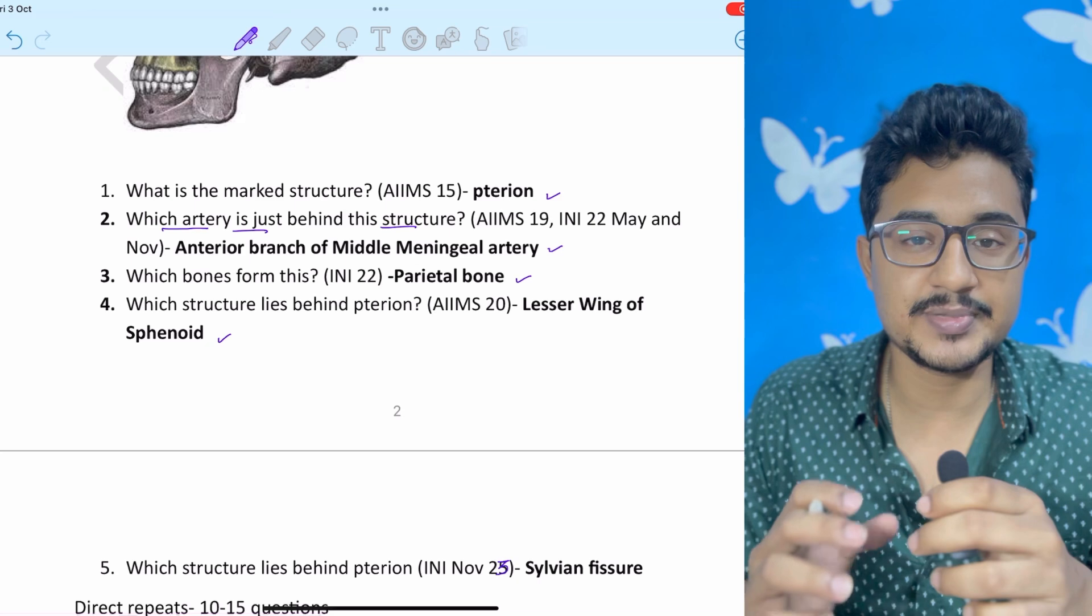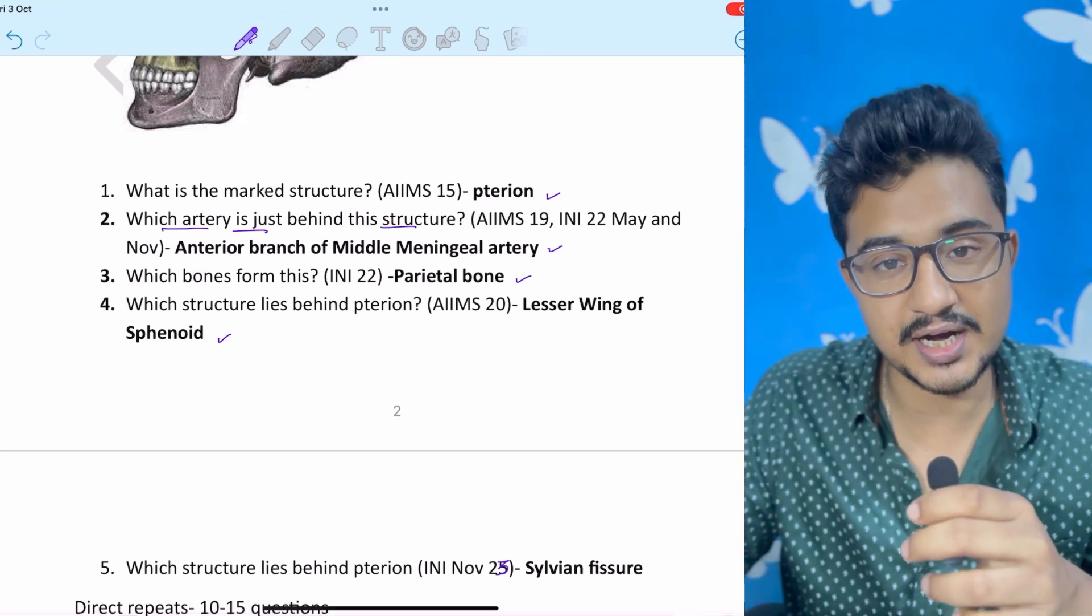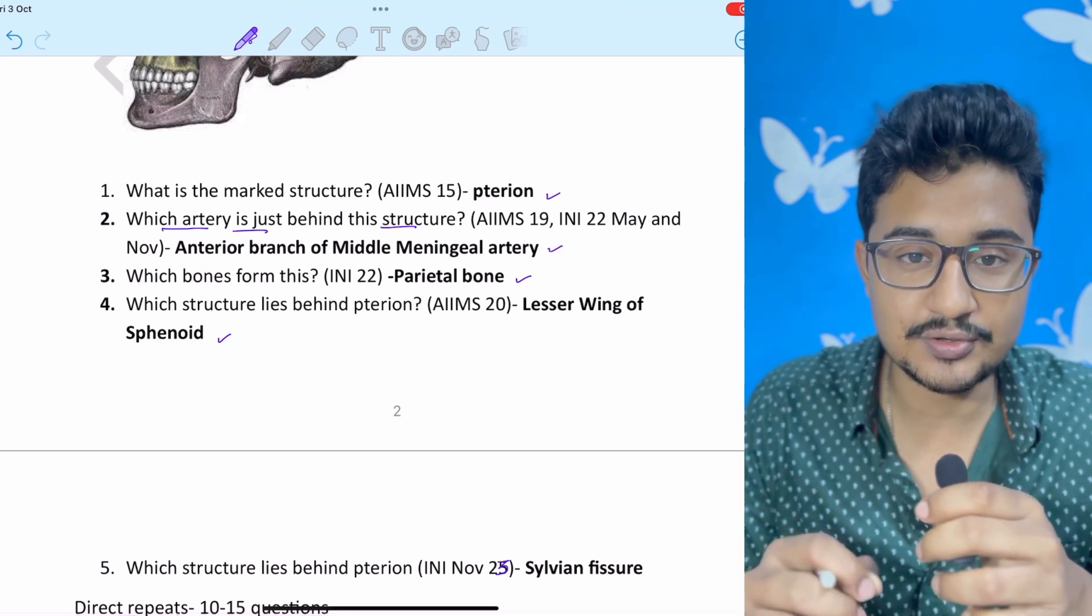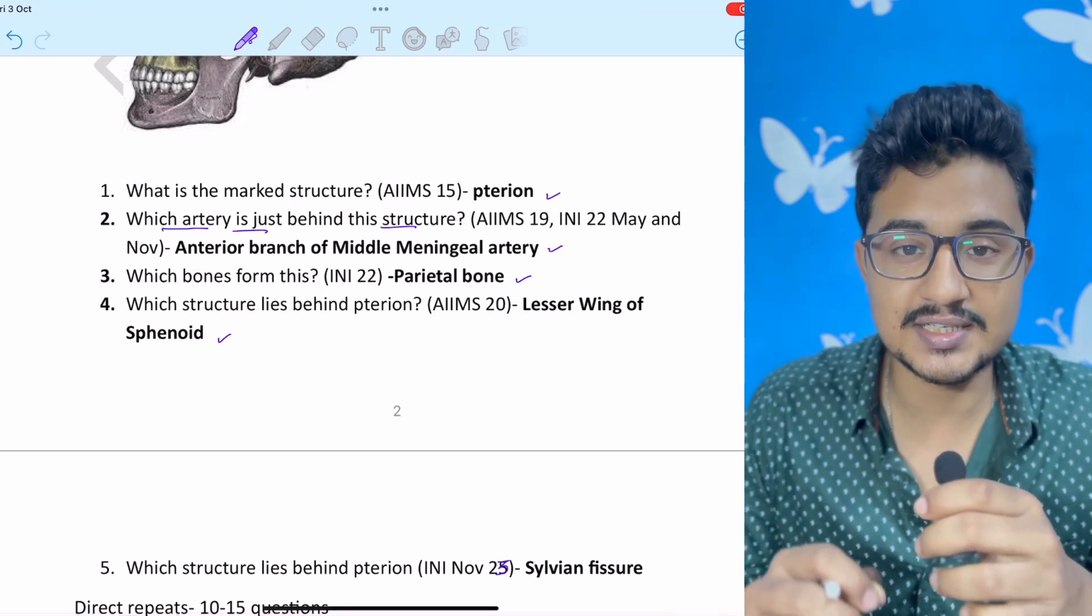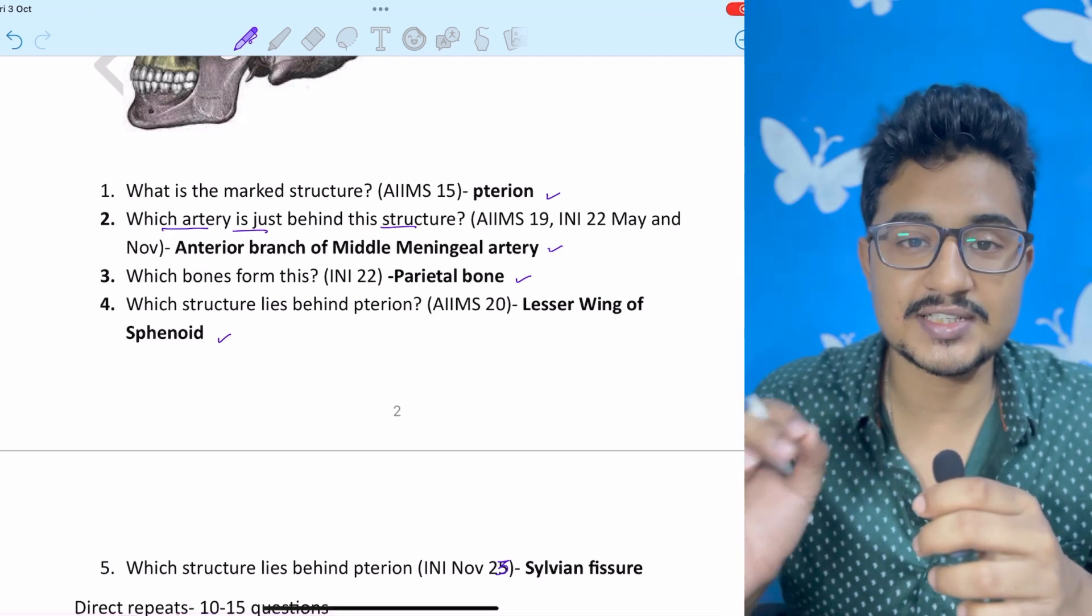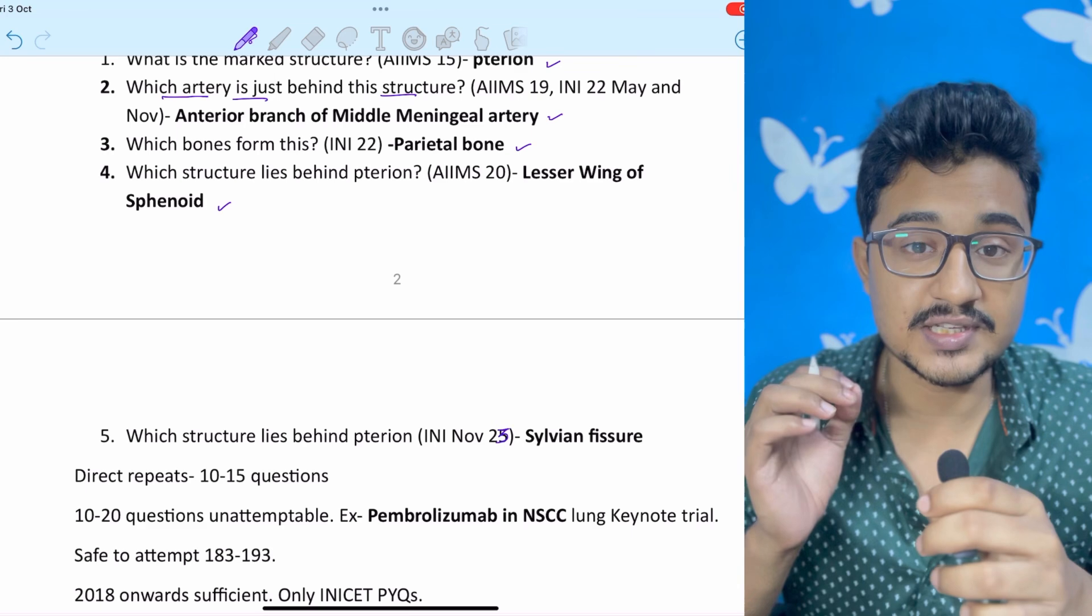They are going what are the structures lying behind terion. So you have to search in chat GPT or from the authentic sources that what are the other structures lying behind terion. Like this you have to study each and every previous year question of past eight years of INICET, need PG no need to do. And you have to see the direction of the question.